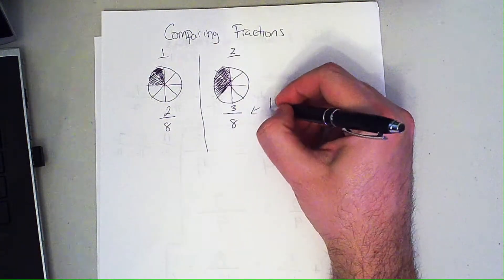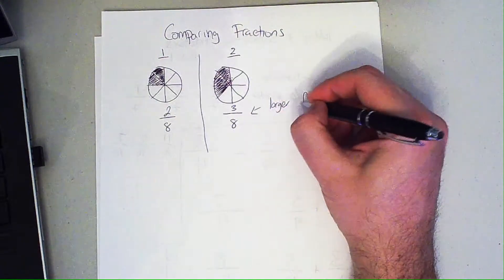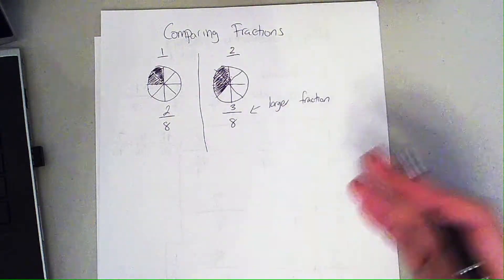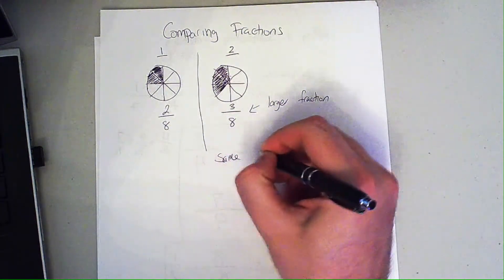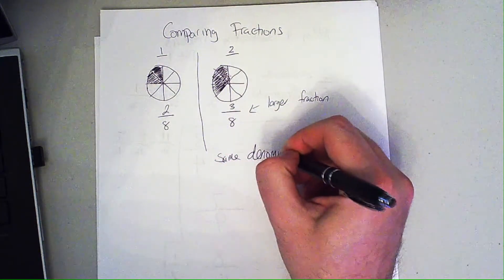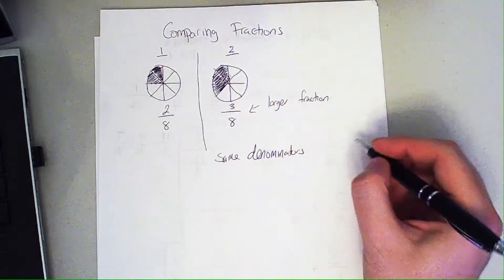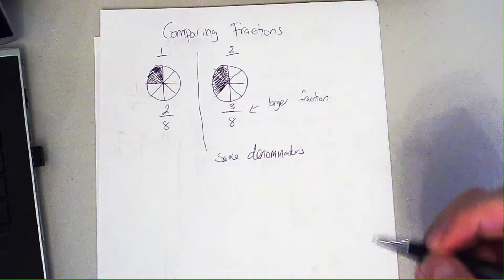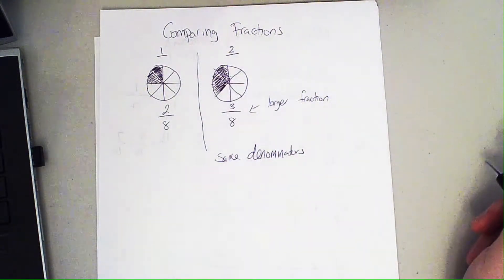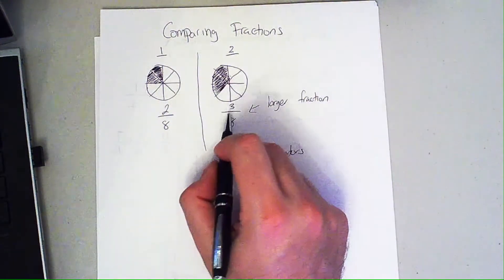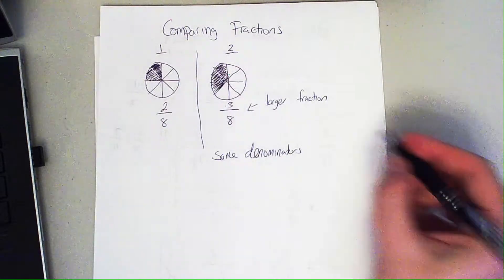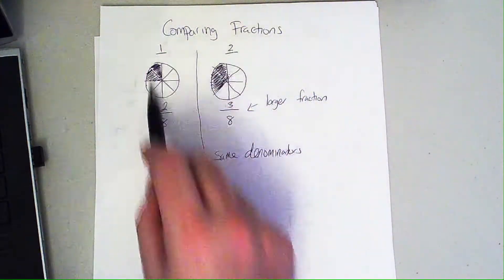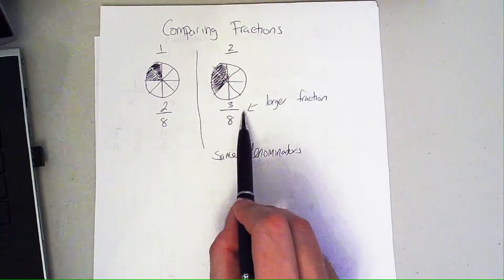Here's the important thing to remember: when the denominators are the same, the larger numerator is the bigger fraction. In this case, 3/8 is bigger than 2/8. And I'm going to show you another trick when we get to our decimals on how to figure that out or how to confirm this.